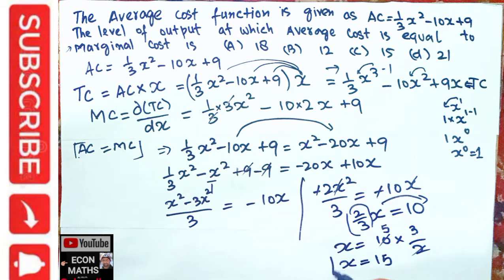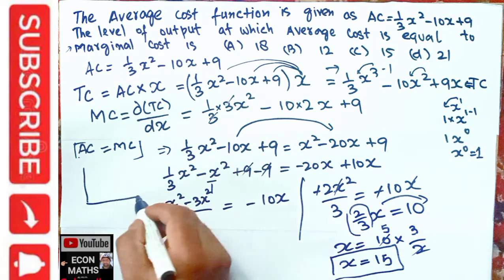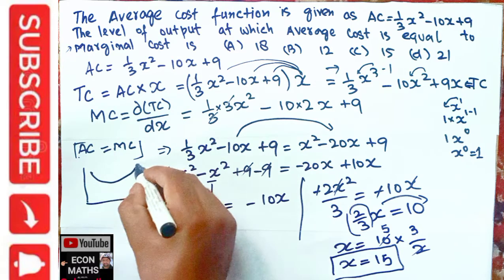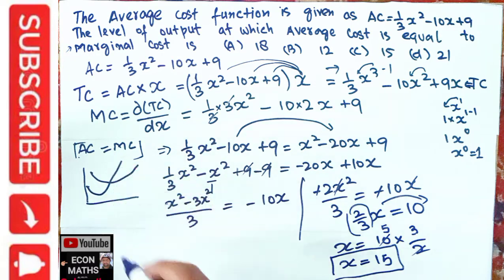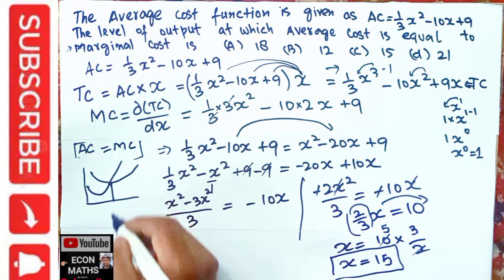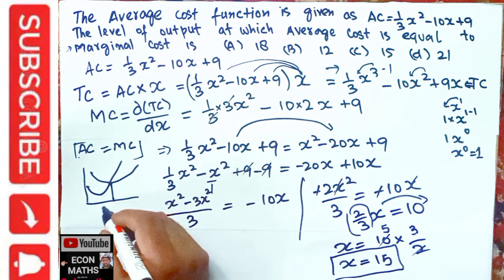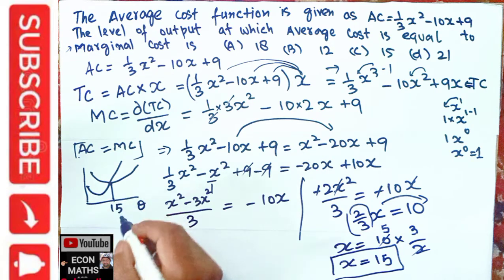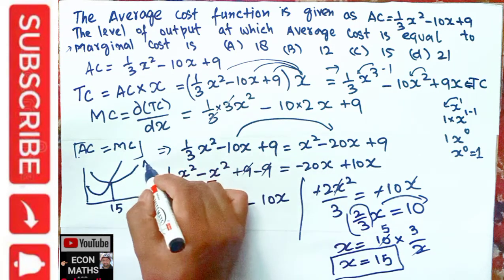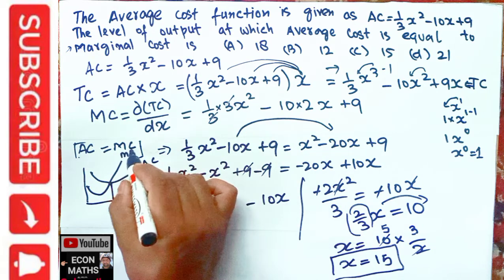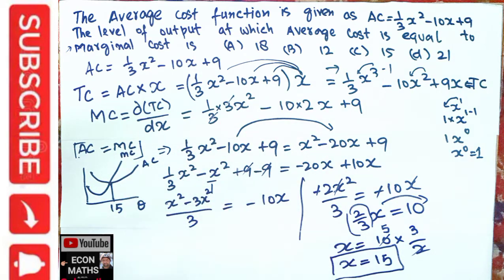So the level of output at which average cost equals marginal cost is x = 15. Graphically, this simply means the intersection of the average cost curve and the marginal cost curve occurs at an output level of 15. I hope I made myself clear in this video. Thank you.